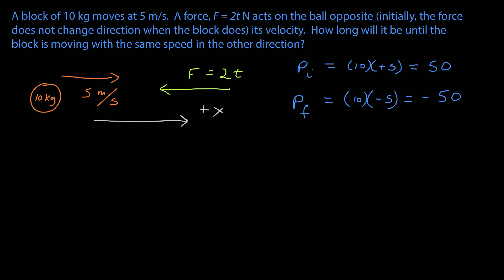Here I know my final momentum, because I want to know how long it'll take until it's going with the same speed in the other direction. That means that I'll have a speed of 5 in the negative x direction. The momentum would be mass, 10, times velocity, negative 5, or negative 50 newton seconds. I can calculate the momentum difference, which is the final momentum, minus the initial momentum, which is negative 100 newton seconds.